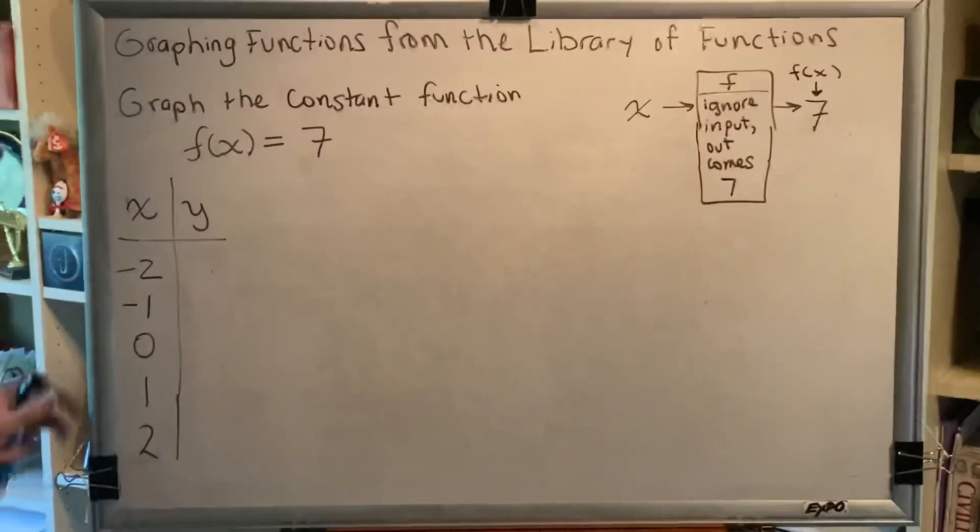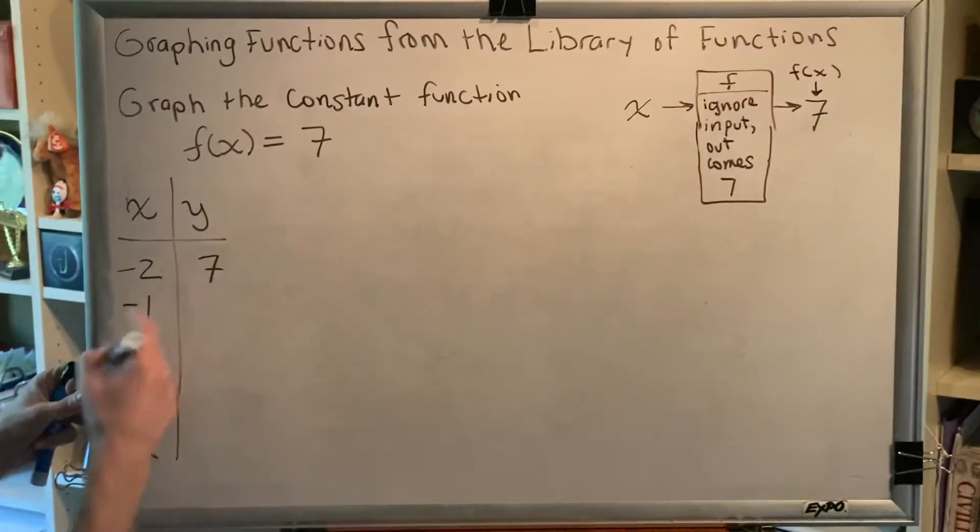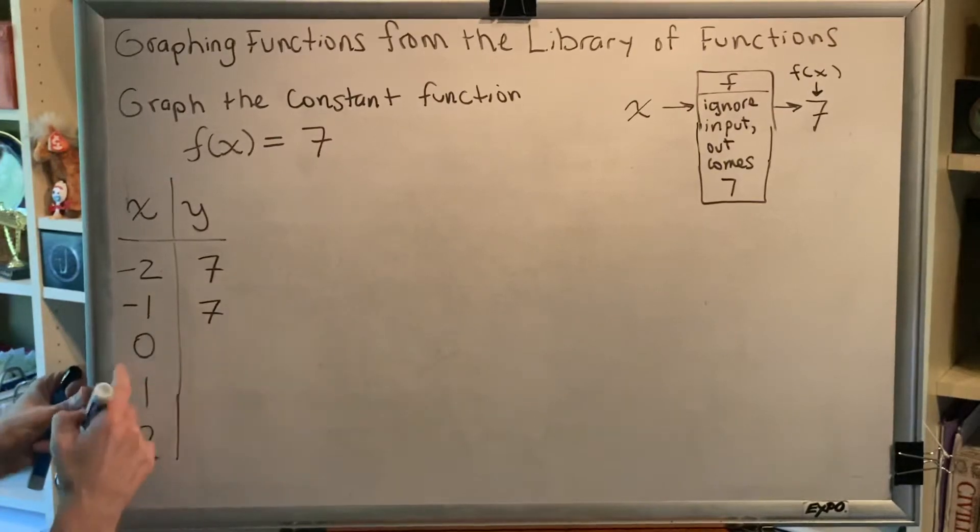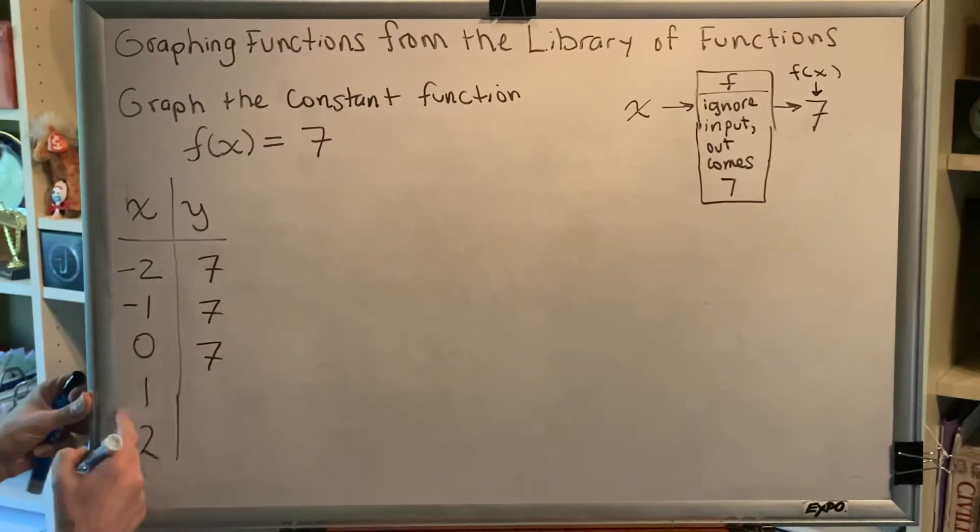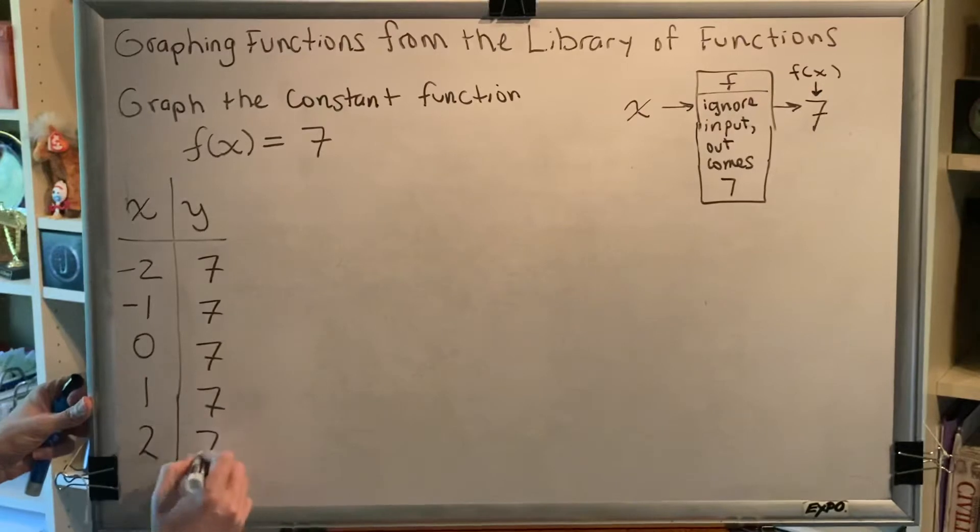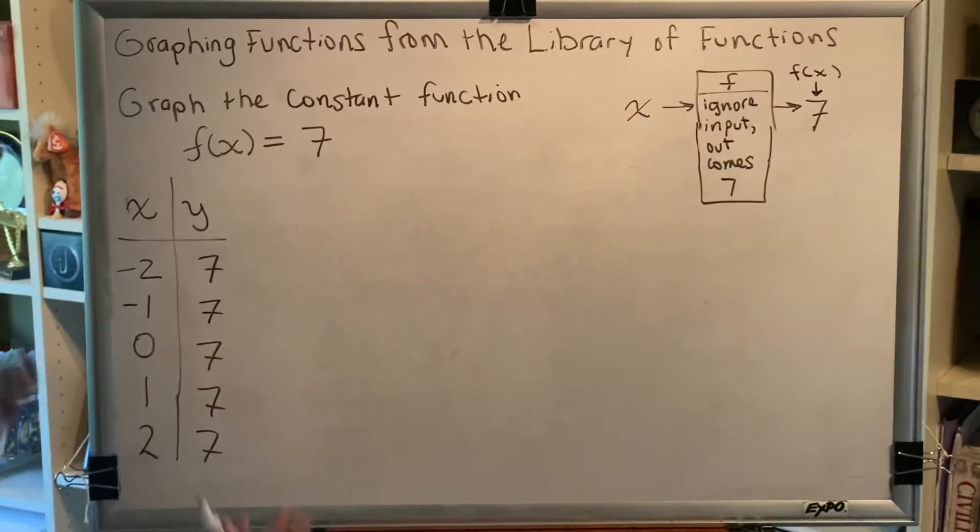So we get points like this: (-2, 7), (-1, 7), (0, 7), (1, 7), (2, 7). The output is always 7. It doesn't matter what x is.